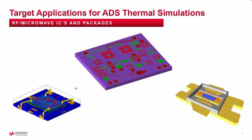Typically, the device counts we're dealing with in ADS are much lower. Many times we need to analyze not only the IC but also the package, because the package can really impact thermal performance. As you'll see in the videos, we can model the package by explicitly drawing and solving it along with the IC, or we can apply boundary conditions on the IC and model the package that way.